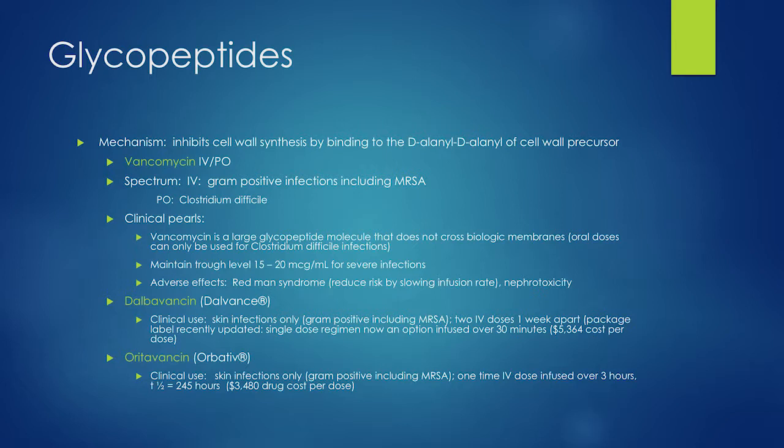Clinical pearls: vancomycin is a very large glycopeptide — it won't cross big membranes, so you can't give it PO to treat systemic infections. Also, because of its large peptide nature, vancomycin doesn't cross into CSF very well. Even though we still use it empirically for meningitis, this means you need to give extremely high doses to get adequate CSF penetration.